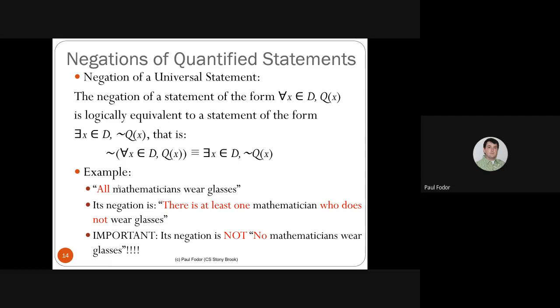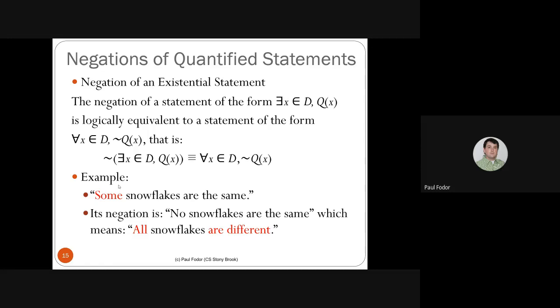The negation of 'all mathematicians wear glasses' is not 'no mathematician wears glasses' — it is 'there exists at least one mathematician who doesn't wear glasses.' When you push negation through a quantifier, it becomes the other one. For the existential quantifier: not(∃X in D such that Q(X)) is logically equivalent to ∀X in D, not Q(X).